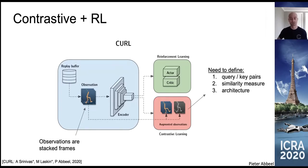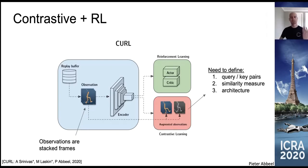This hopefully learns a good representation of the visual observations, allowing us to learn more quickly than without this additional contrastive loss. A few questions need answering: how do we generate query-key pairs, what is our similarity measure, and what is our architecture? One thing to note is that we always feed four stacked frames at once — because a single image doesn't contain velocity or angular velocity, whereas sequential frames allow that information to be present in principle.